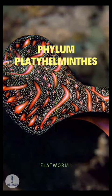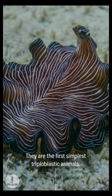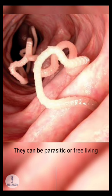Phylum Platyhelminthes — Flatworms. They are the first simplest triploblastic animals. They are acoelomate and have a flat, ribbon-like body. They can be parasitic or free-living. They are the first animals to show bilateral symmetry.